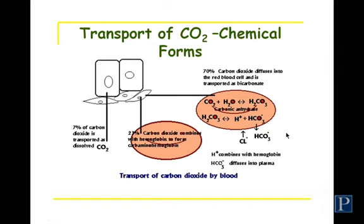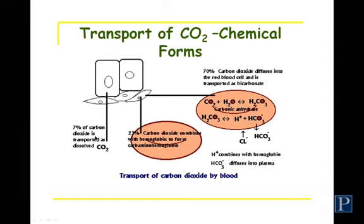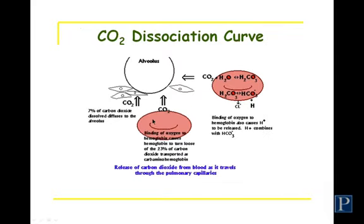At the level of the tissue, cells are producing carbon dioxide, and this is how it is transported in the blood. The carbon dioxide has to be transported up to the lungs, where, because of a concentration gradient, CO2 moves from the blood into the alveolus.